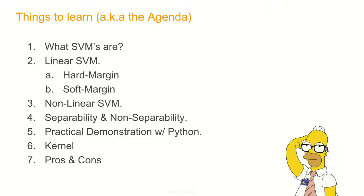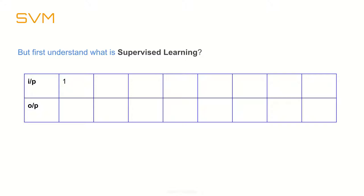Linear SVMs have two types: hard margin and soft margin. We're not going to do the heavy mathematics here — if you want to learn that, I'll encourage you to check a video from MIT, and I'll provide the link. We are simply going to understand what SVMs are, then do a practical demonstration with Python, then look at the kernel trick, and finally the pros and cons of SVM.